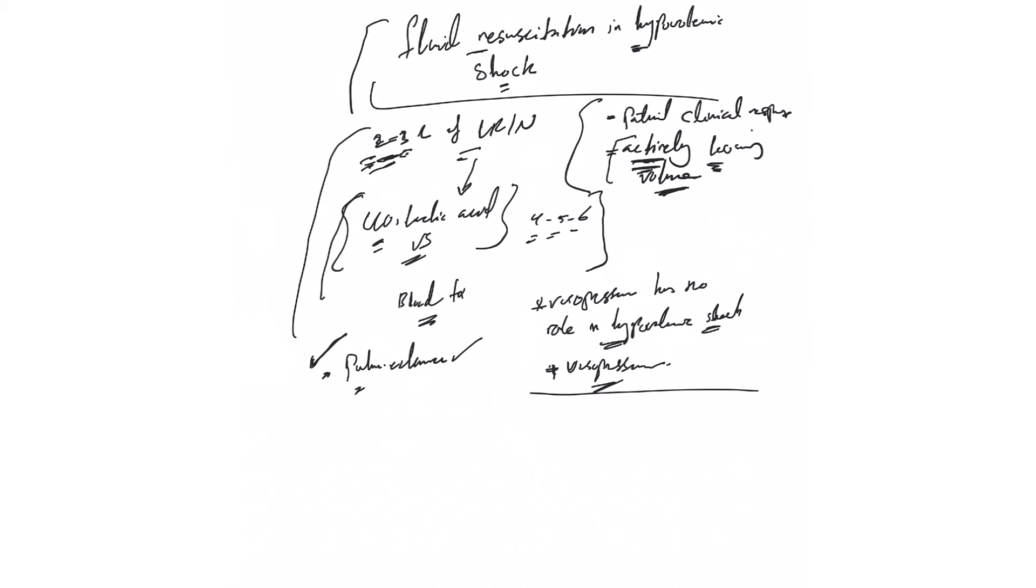Stop any active losses. If there is hemorrhagic anemia, you need to add blood transfusion. There is really no upper limit on the fluids.